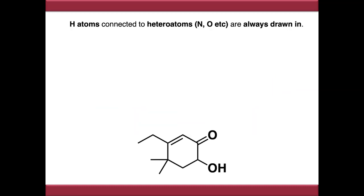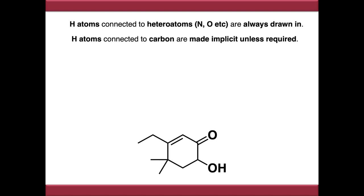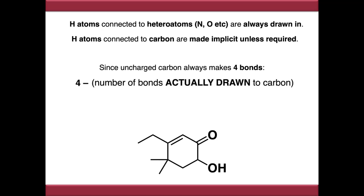As well as implying carbon atoms, we can also imply hydrogens. Hydrogens connected to heteroatoms — any atom that's not carbon, most often nitrogen or oxygen — are always drawn in. But any hydrogen atom attached to a carbon, unless needed for clarity, is usually implied. A good rule of thumb: neutral carbon always makes four bonds, so four minus the number of bonds drawn to that carbon gives you the number of implied hydrogens.